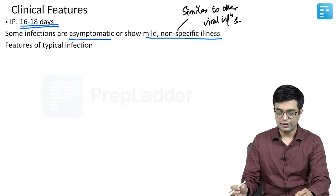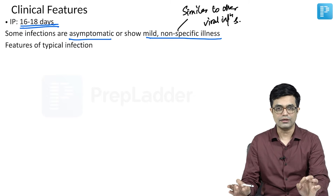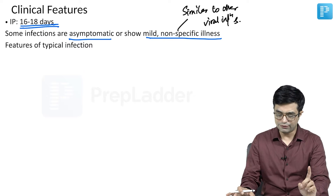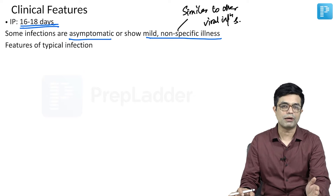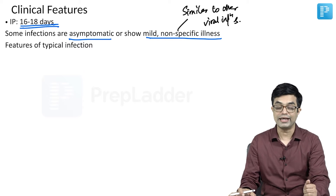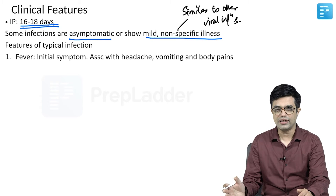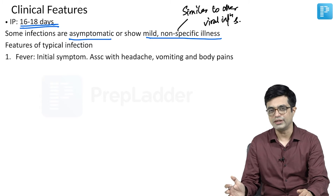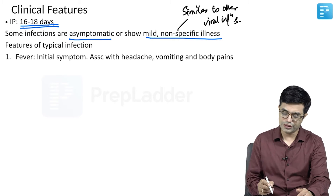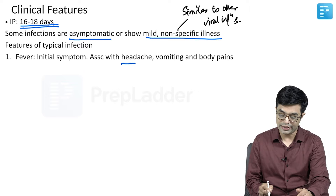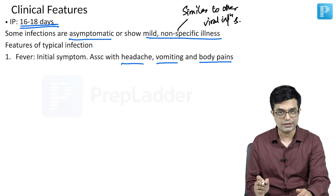More typically, the typical infection will follow a set pattern. Initially, the first symptom to appear in a typical mumps infection is fever. Fever is the initial symptom and usually lasts about two to three days, and is often associated with other prodromal symptoms like headache, vomiting, and body pains.